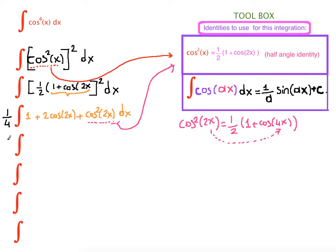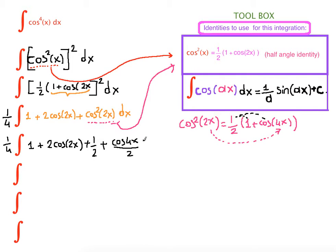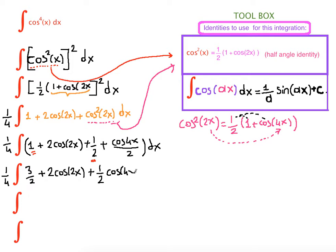Let's rewrite it. One fourth is here: one plus two cosine of 2x, plus we distribute this one half — one half times one is one half, plus one half times cosine of 4x is cosine of 4x over 2. Now we're going to combine the fractions: one plus one half is three over two, plus two cosine of 2x, plus one half times cosine of 4x, dx.